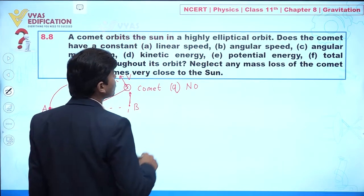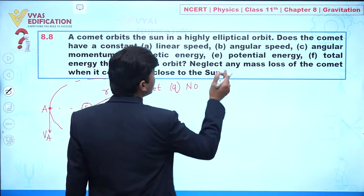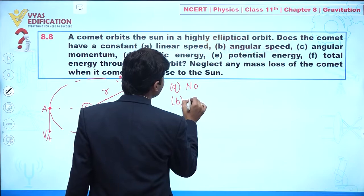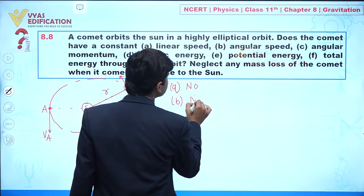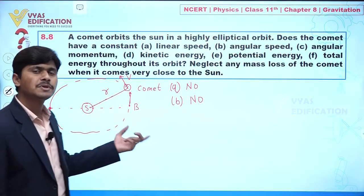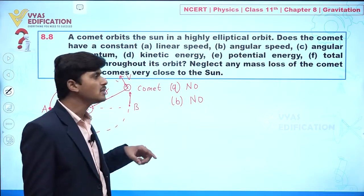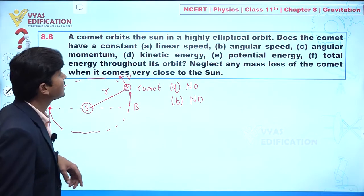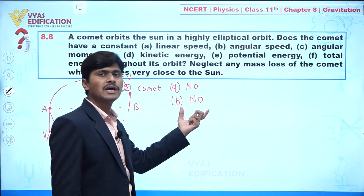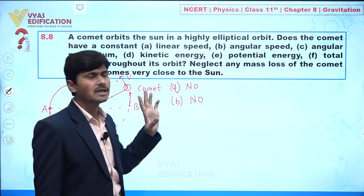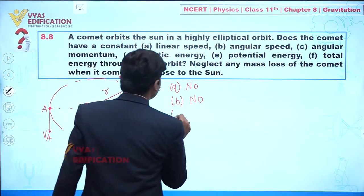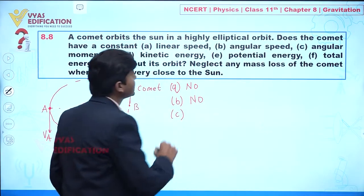Part (b): Angular speed. Angular speed also changes throughout the orbit. So the answer is: No, angular speed is not constant.